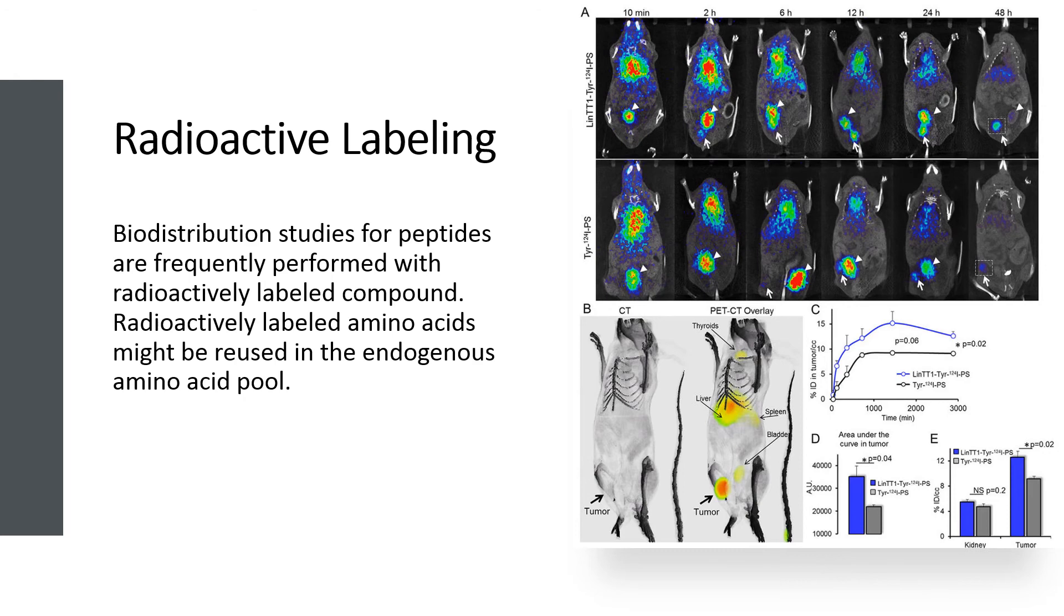In addition, it is crucial to differentiate whether the measured radioactivity represents intact protein, labeled metabolites, or the released label itself. Radioactivity that can be precipitated with trichloroacetic acid, for example, can be used to delineate active protein from released label and metabolites of small molecular weight.